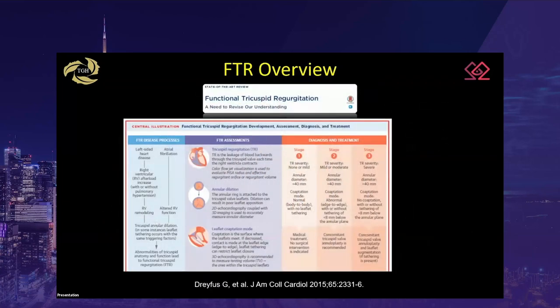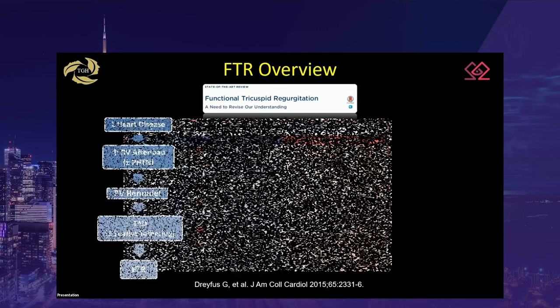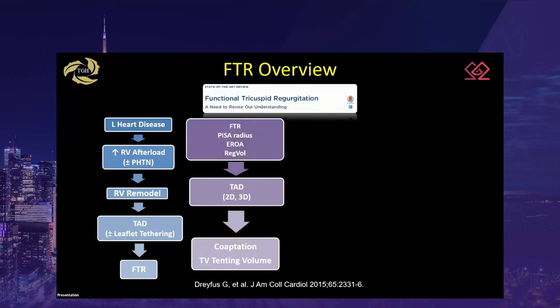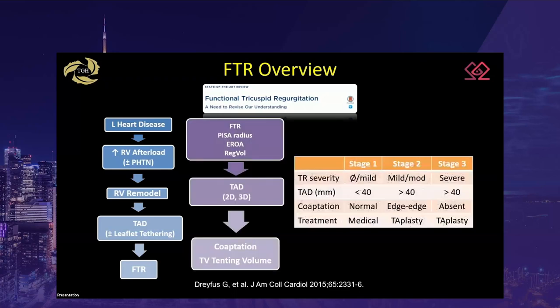A 2015 paper by Dreyfus et al nicely summarizes the development, assessment, diagnosis, and treatment of functional tricuspid regurgitation. This talk will focus on the first two parts — structural changes in the tricuspid valve and the echocardiographic assessment — and will not cover tricuspid regurgitation grading or surgical management, which are covered in other sessions.